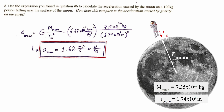Using that same expression for the Moon — substituting the mass of the Moon, 7.35 times 10 to the 22nd kilograms, and the Moon's radius instead of Earth's values — predicts that the acceleration of any object near the Moon's surface is about 1.62 meters per second per second, regardless of its mass. Since meters per second squared is also the unit for gravitational field strength, this also tells us the Moon's gravitational field strength near its surface.